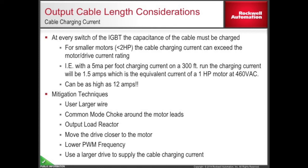When experiencing this problem, the drive will trip on hardware overcurrent on a start, and the motor will never run. To avoid this issue, several techniques can be used. Using larger cable will physically separate the wires and provide thicker insulation, reducing the capacitance of the wire and the cable charging current. Adding a common mode choke or an output load reactor will increase the impedance between the drive and the motor and will also reduce the cable charging current. Lowering the PWM frequency will reduce the frequency of the transistor's firing and will also lower the cable charging current. Many times the drive has to be increased in size to provide this additional current.